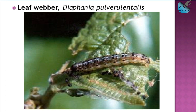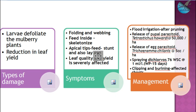The next is the leaf webber, Diaphania pulverulentalis. As the name suggests, they feed by webbing the leaves. The damage is like other defoliators. The symptom includes folding and webbing of leaves, feeding inside the web, and skeletonized leaves starting from the apical tip. Stunted growth occurs due to their feeding at the tips. They also lay eggs there, and leaf quality ultimately reduces.